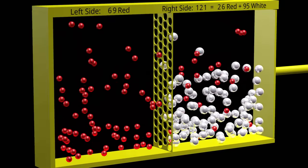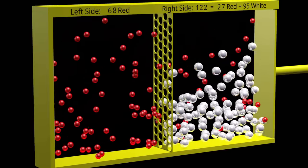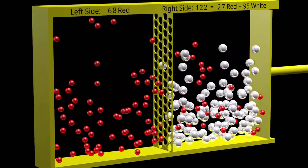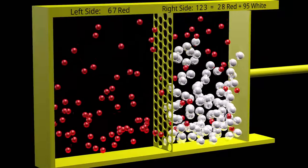Suppose we want to reverse this process and move all the red particles back to the left side, or at least as many red particles as we can. We can do this through what we call reverse osmosis.